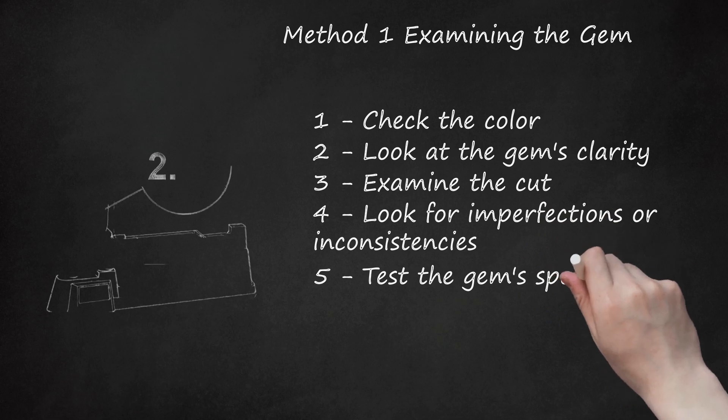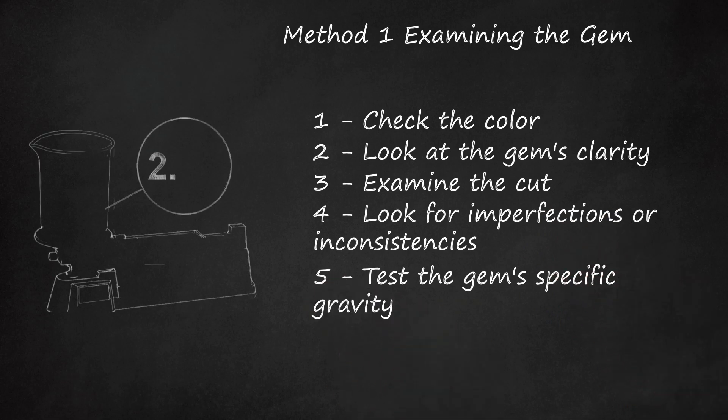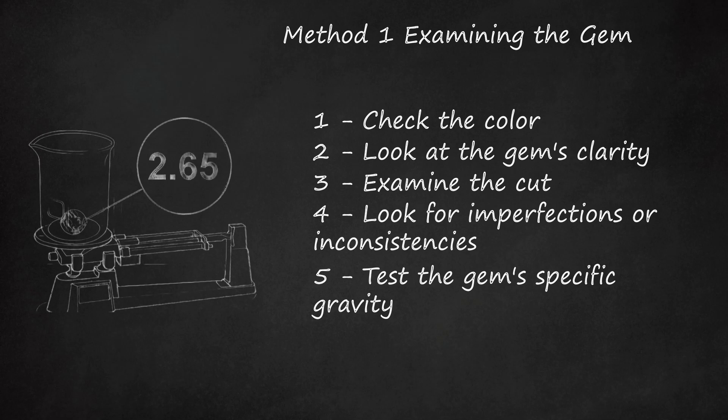5. Test the gem's Specific Gravity. Specific gravity is a term used by jewelers to ascertain the rough density of a gem. For amethyst, specific gravity should be around 2.65. You can measure specific gravity with a beaker, big enough to fit your piece of amethyst in, and a scale.